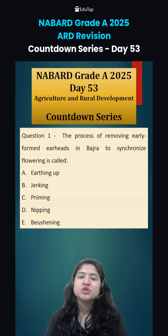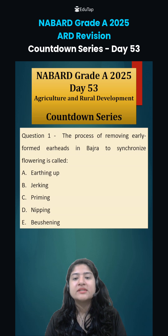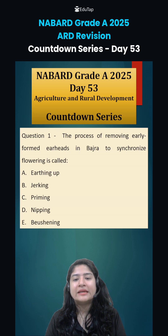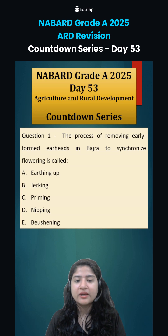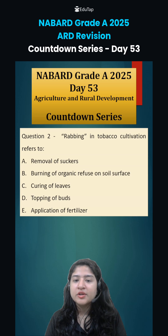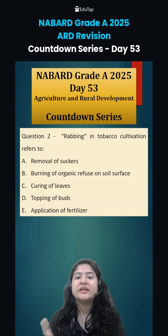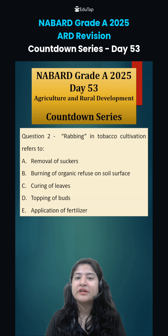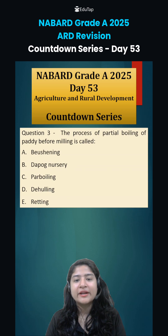Coming to today's questions. Question number one: the process of removing early formed ear heads in Bajra to synchronize flowering is called — you have to tell the terminology. Question number two: drabbing in tobacco cultivation refers to what — you have to tell about that terminology as well.